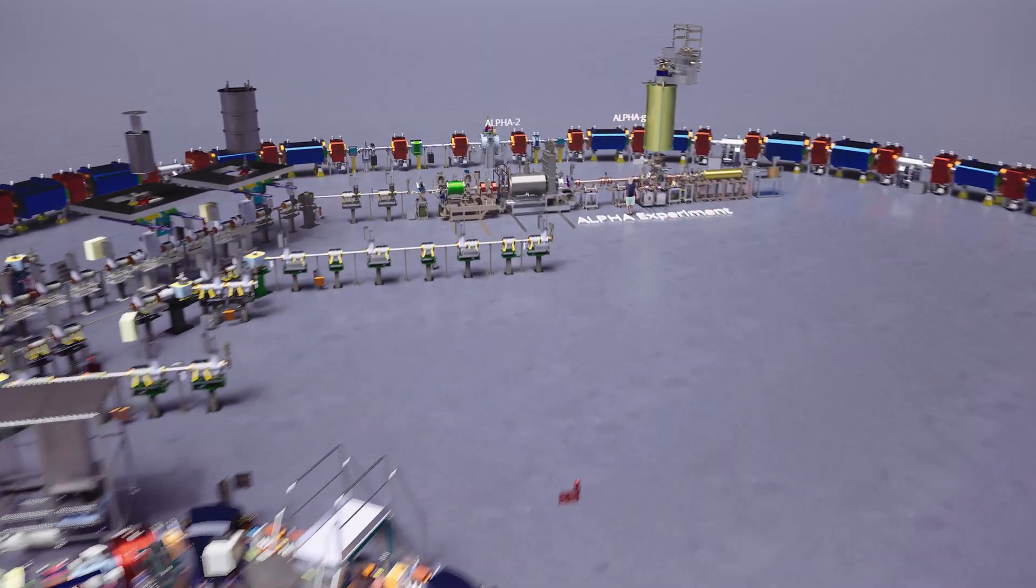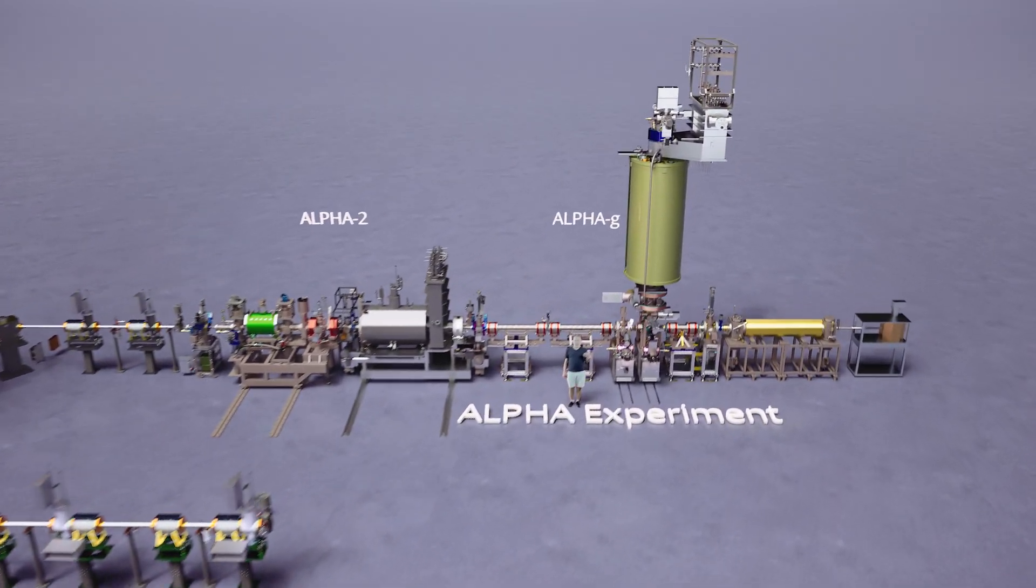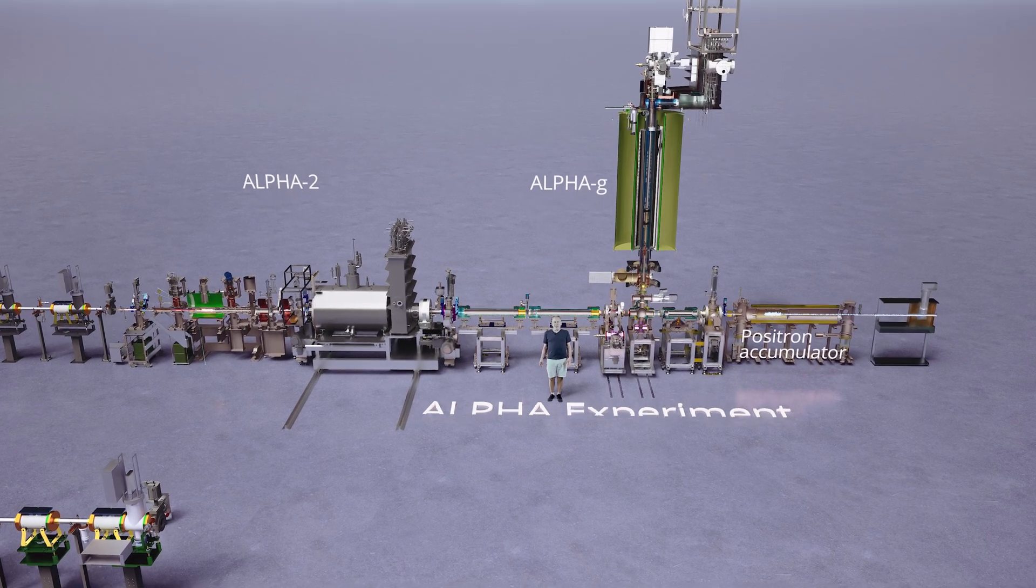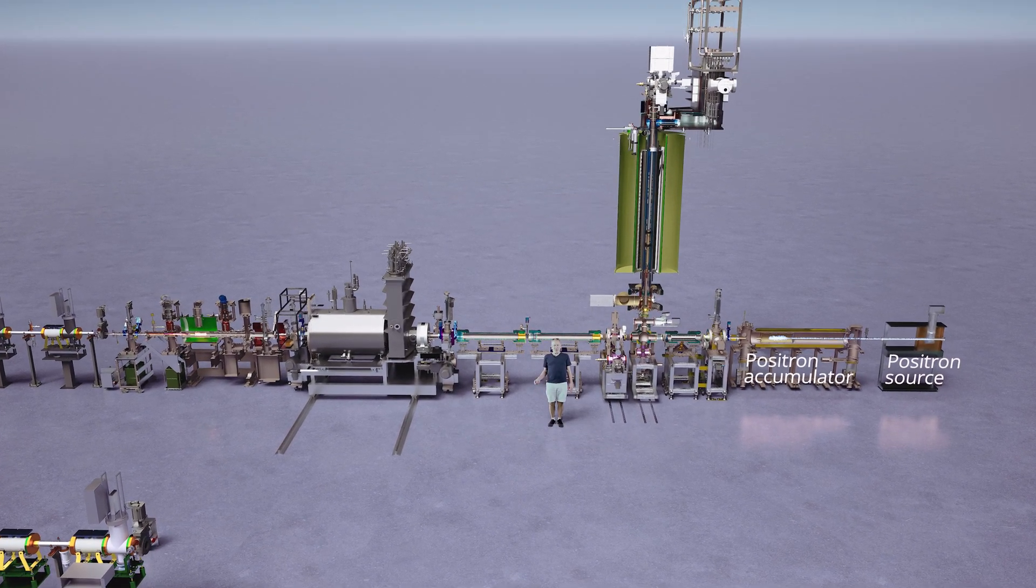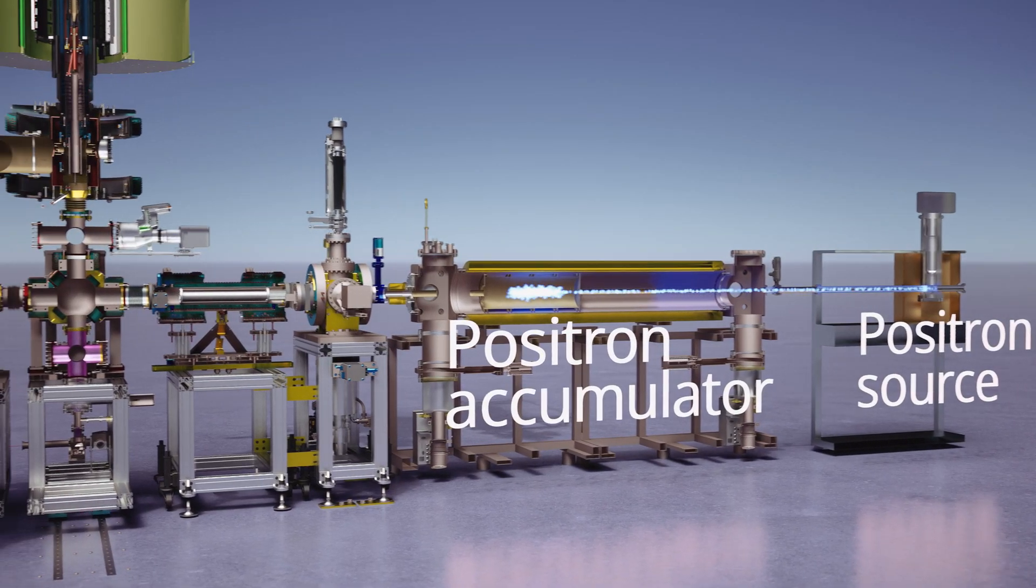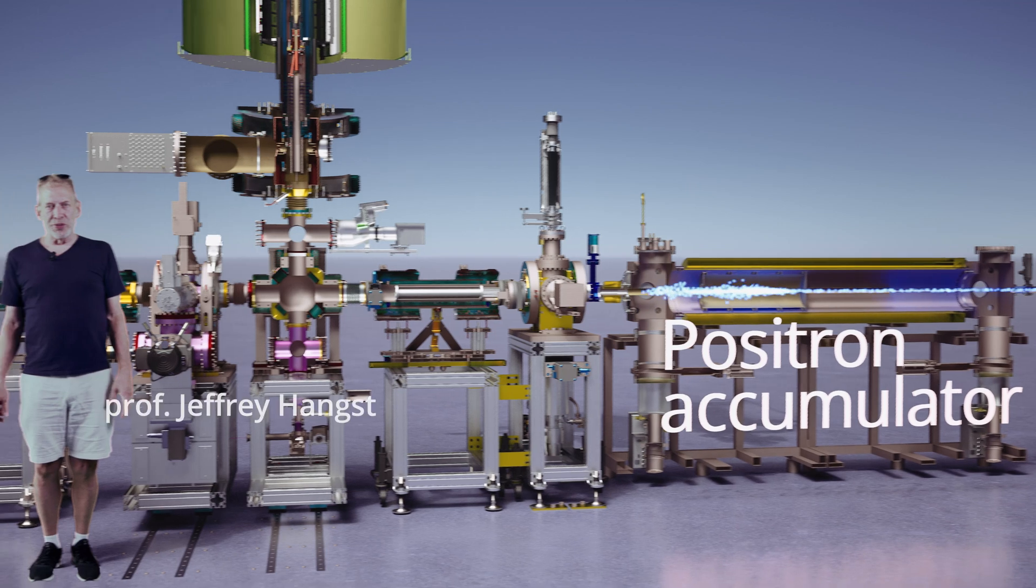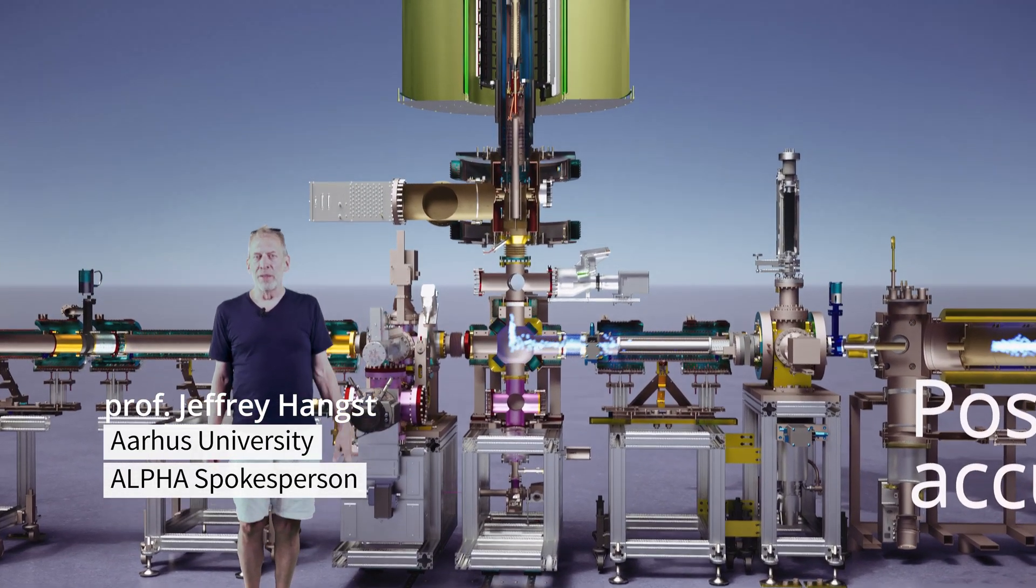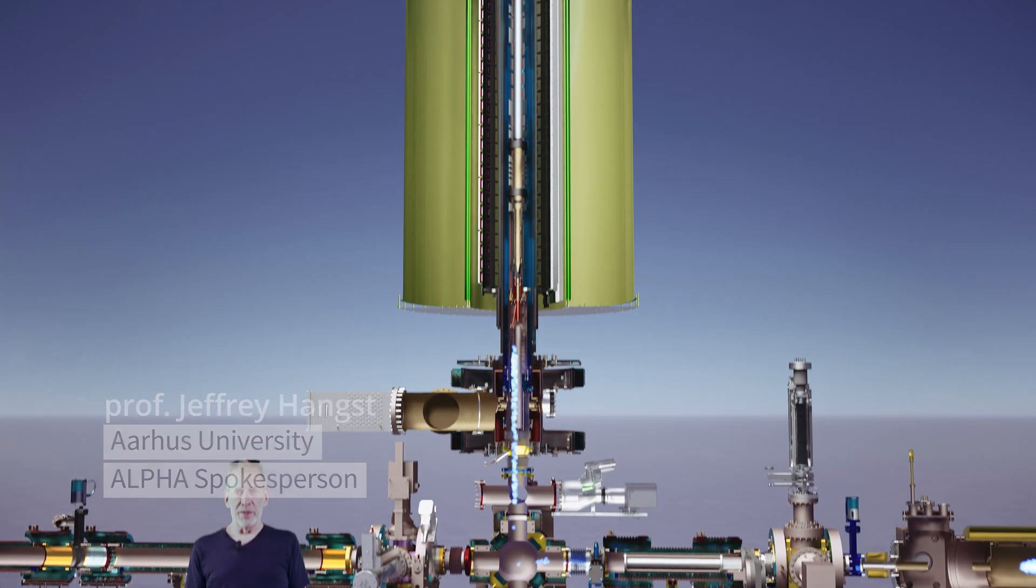Now we're zooming in on the Alpha experiment, which is working with the antihydrogen atom. We have to make antihydrogen atoms by synthesizing them from their components, which are positrons. We get positrons from a radioactive source, re-trap some of them, and then shoot them up into the vertical Alpha-G machine, which is where we're going to actually do the gravity experiment.